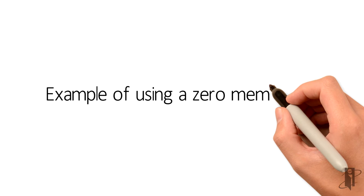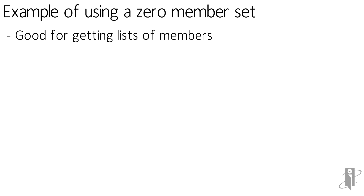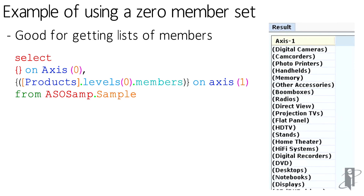A set can also consist of zero members. A good example is the select statement shown below: we select nothing — an empty set — on Axis 0 (columns), and we select the list of Level 0 products on Axis 1 from ASOSamp.Sample. The result is a list of members returned to us. If I wanted to create a dropdown list in Excel or similar, I could execute this MDX query in Smart View and get the list of members to populate my list.